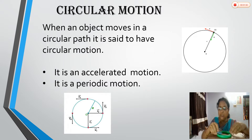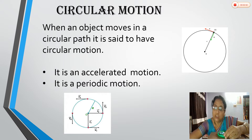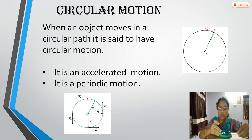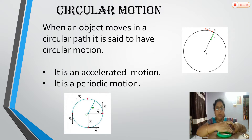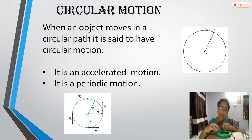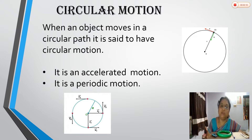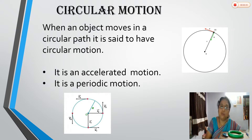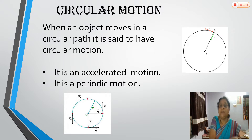Why do we call circular motion an accelerated motion? When the object moves, the direction of its linear velocity is along the tangent at every point. As the object moves, the tangent also changes, meaning the direction of linear velocity keeps changing. When there is a change in velocity, there is acceleration. So circular motion is always an accelerated motion.